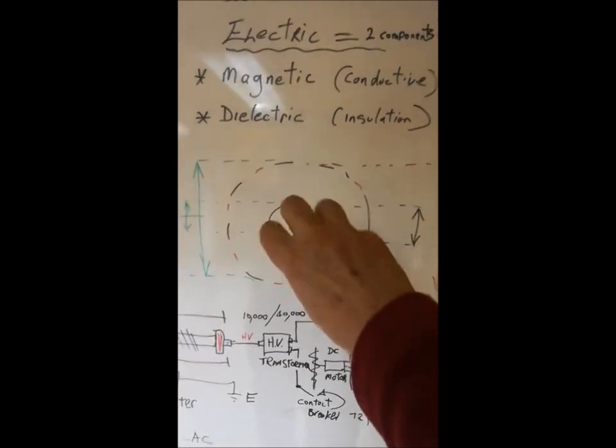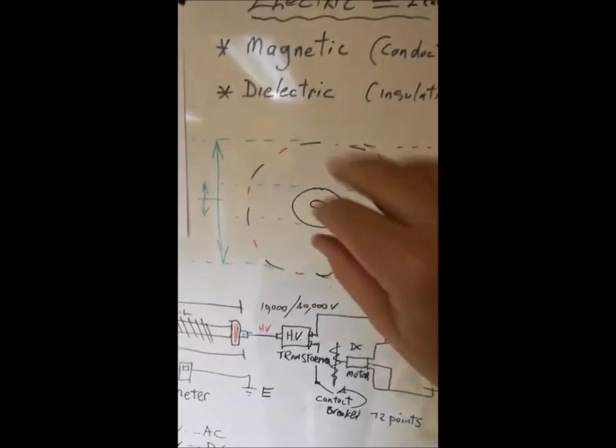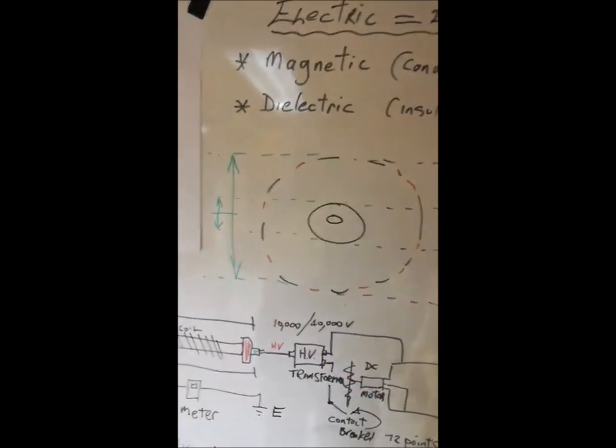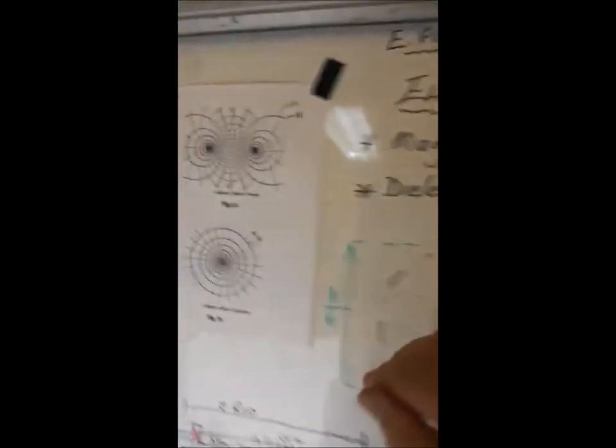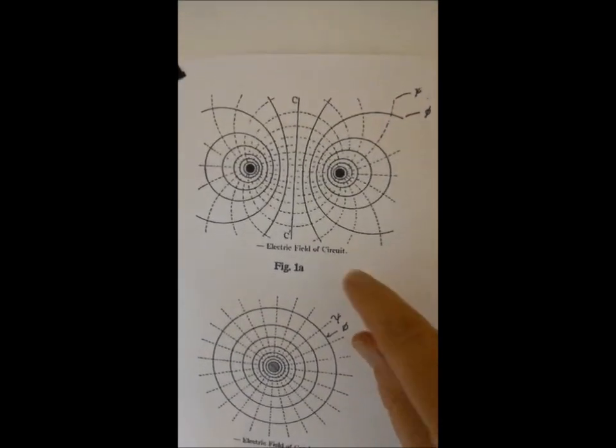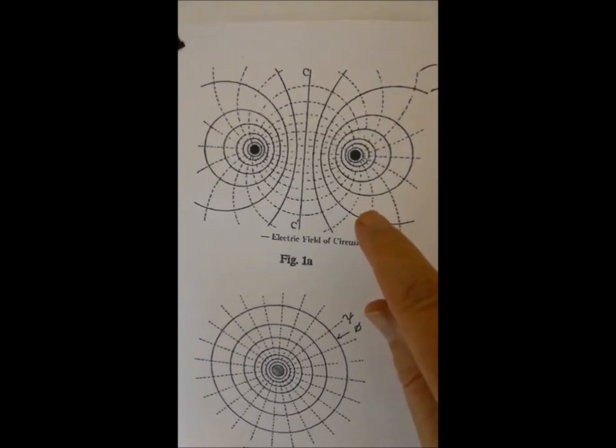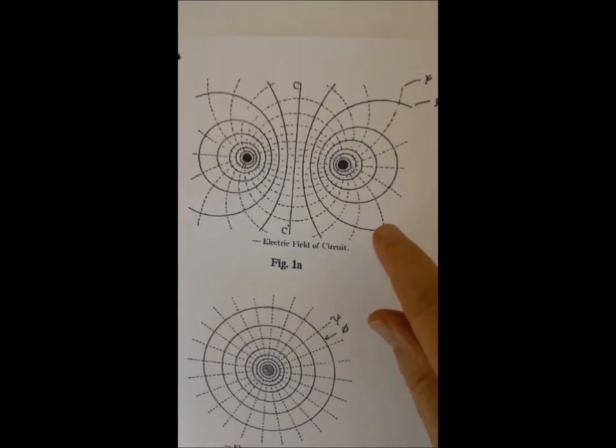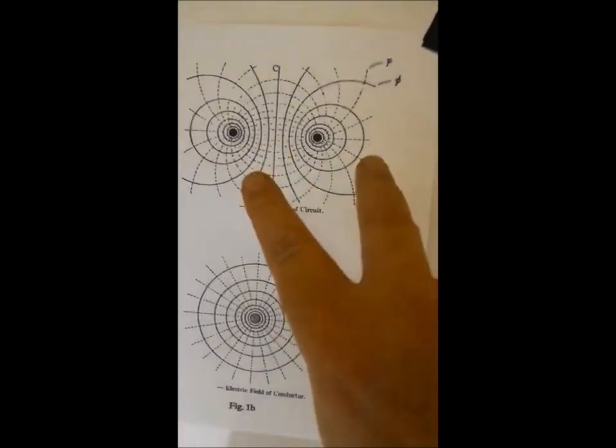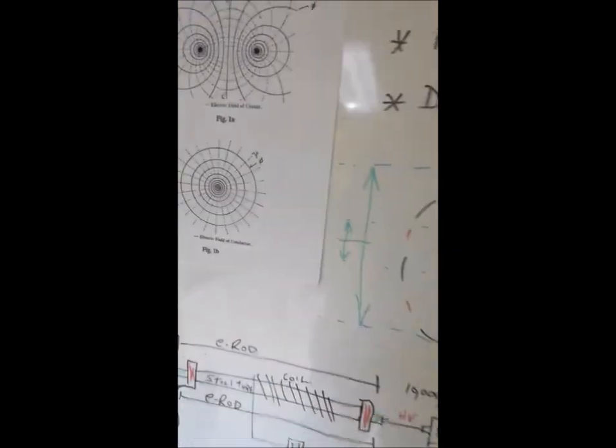This conductor has a flux going out and back, out and back in an alternating manner. It has a magnetic flux but also it has a dielectric pulse as well which is at 90 degrees to one another. This is taken from I believe Steinmetz drawings about what's going on between two parallel conductors.